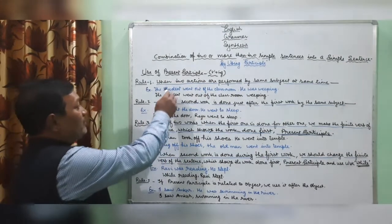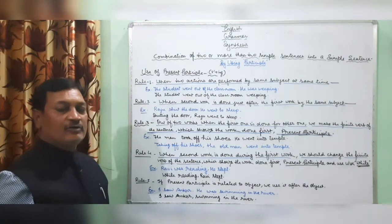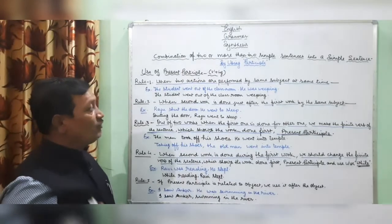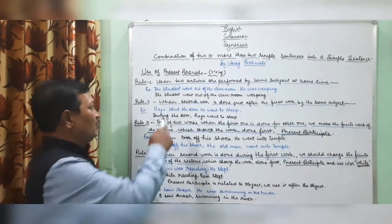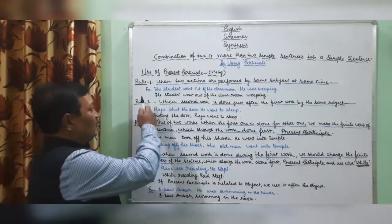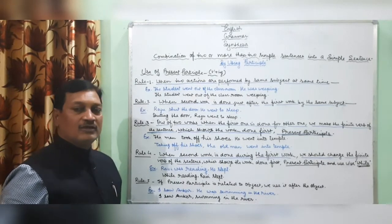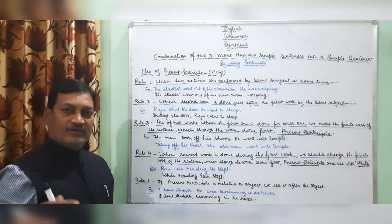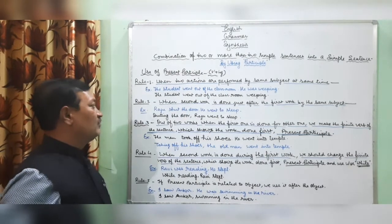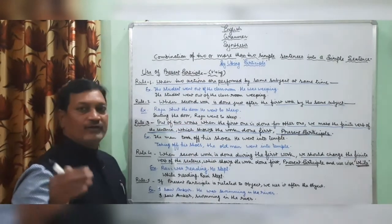Let's see some other rules of present participle. When two actions are performed by the same subject at the same time, we use present participle to combine the sentences. Example: 'The student went out of the classroom. He was weeping.' Combined: 'The student went out of the classroom weeping.' Another rule: when the second work is done just after the first work by the same subject, we use present participle. Example: 'Raju shut the door. He went to sleep.' Combined: 'Shutting the door, Raju went to sleep.'